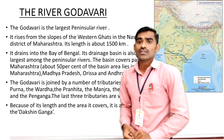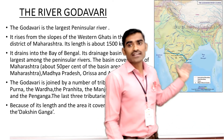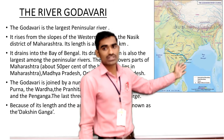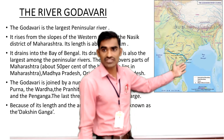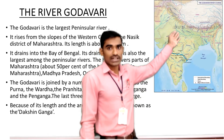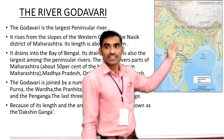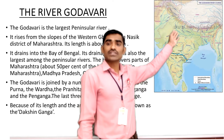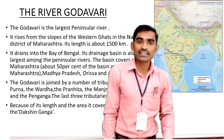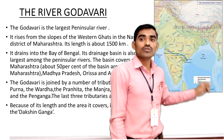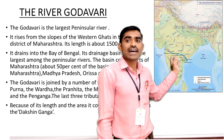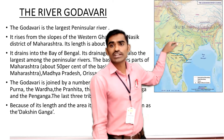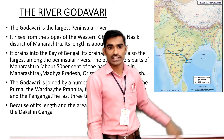This river is also known as Dakshin Ganga because it is the biggest river after the Ganga River. The Godavari River is the second largest river after the Ganga River, and it is also known as Dakshin Ganga as it is located in Southern India.